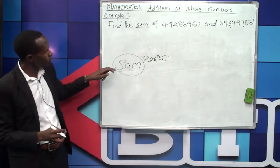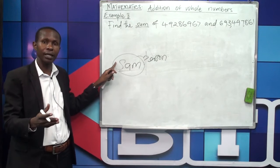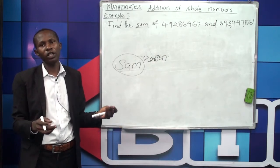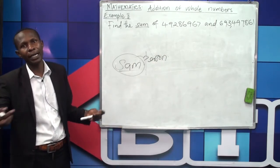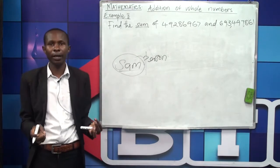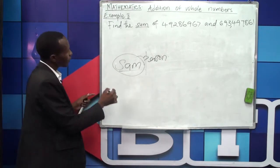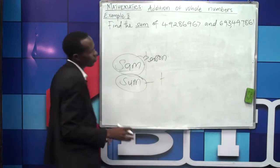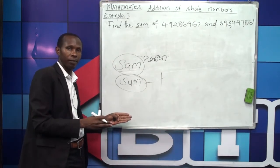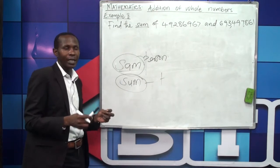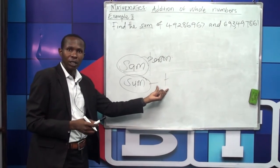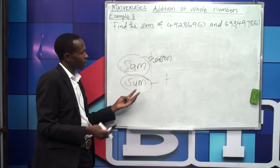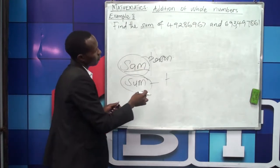Don't confuse 'sum' with 'Sam.' Sam is a person's name. So don't find a story that says 'Sam has got three pens — how many pens did he remain with after giving out one?' and then add everything because you saw the word 'Sam.' The word 'sum' with a U is what represents addition or altogether or plus. Sum with an M is a name — it's a noun.